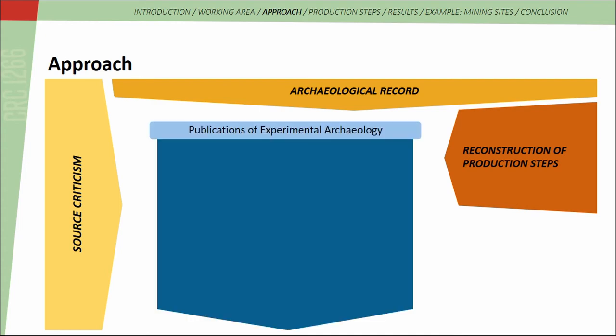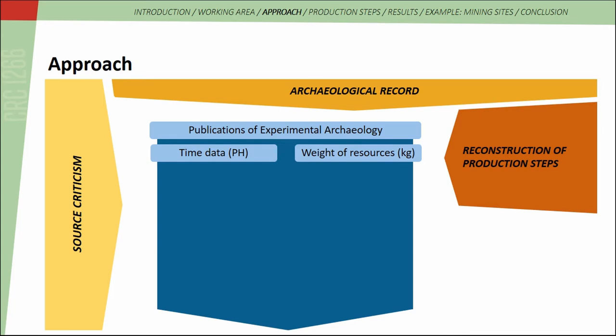I collected time data and the weight of used resources — ore, copper, and wood — in kilograms. To make data from different experiments comparable, the time data were put into relation with the weight of the required resources. This means a given amount of kilograms of wood is required to smelt a given amount of kilograms of copper ore. A copper-slash-ore-wood ratio for every production step or technique was determined, for example a one-to-two or one-to-one ratio. Charcoal findings from different sites indicate that wood — not charcoal — is used in most production steps.